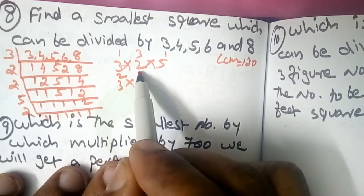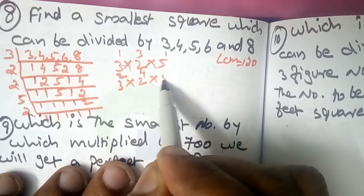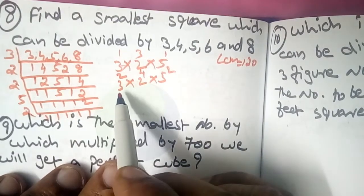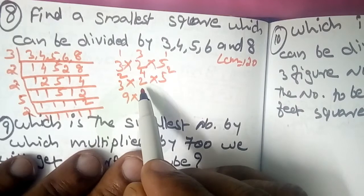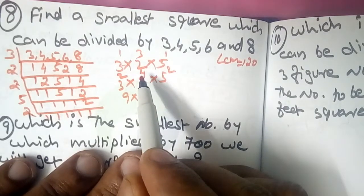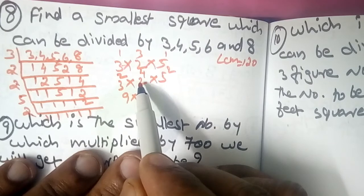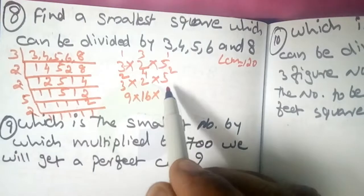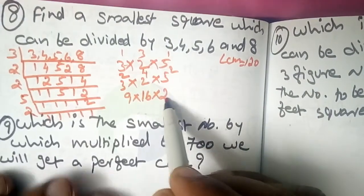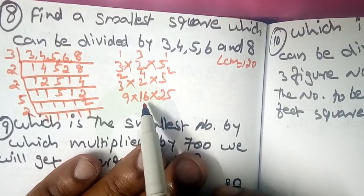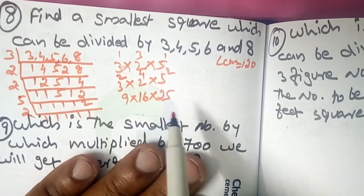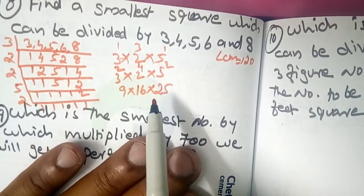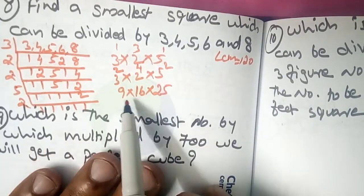3 raised to 2, 2 raised to 4, 5 raised to 2. The smaller side of the square: 3 squared equals 9, 2 raised to 4 equals 16, 5 raised to 2 equals 25. So 25 times 16 times 9: 25 times 16 is 400, times 9 equals 3600.